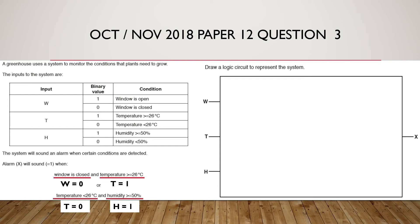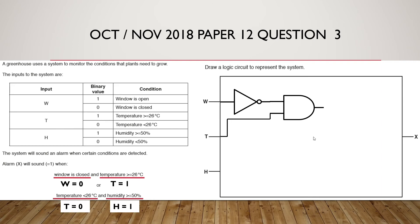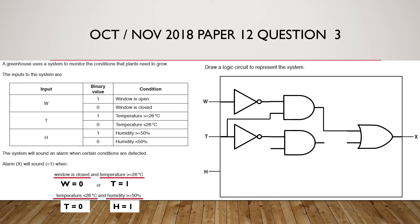All values that are 0 must go through a NOT gate first before going to their corresponding gate; all values of 1 have a straight line. So w=0 requires a NOT gate, and this NOT gate connects to an AND gate. The second input of that AND gate is T=1, so a straight line goes directly into the AND gate. This AND gate connects to an OR gate giving output x. The second input of the OR gate: T=0, so NOT T connects to a second AND gate, and H=1 goes as a straight line to that AND gate. Its output connects to the OR gate.